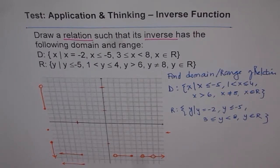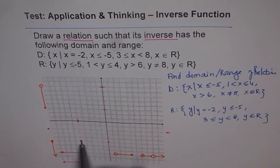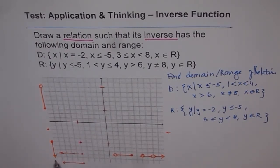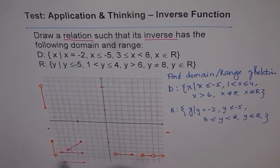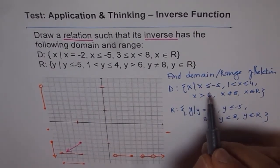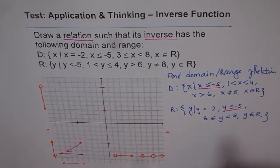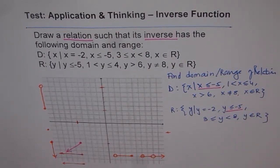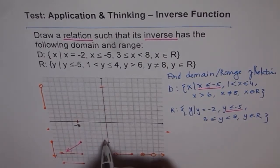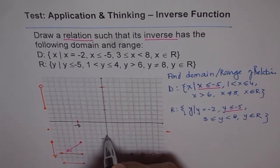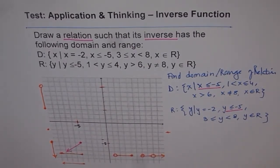Now with an approximate idea of where to draw the lines, it becomes simpler. This point is included from both sides and we can go in both directions, so we draw a straight line with an arrow. This takes care of both x less than or equal to minus 5 in the domain and y less than or equal to minus 5 in the range — starting the line at minus 5 going in both directions.